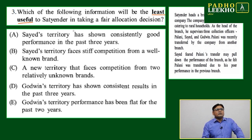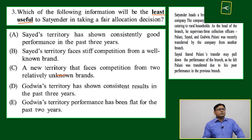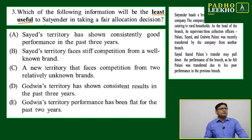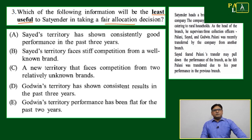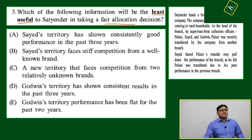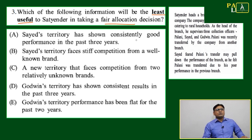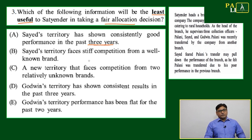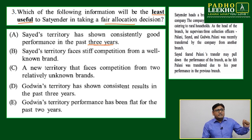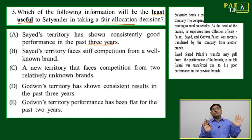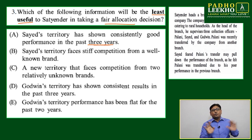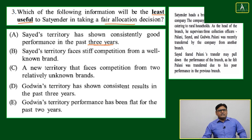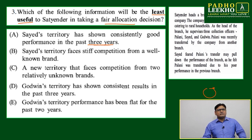Which of the following information will be least useful to Satyandar in taking a fair allocation decision? If you want to allocate something, how will it happen? Say a territory has shown consistently good performance in the past three years — which information is going to be least useful to Satyandar for a fair allocation?